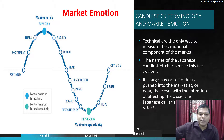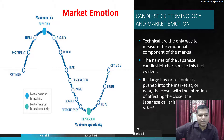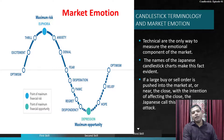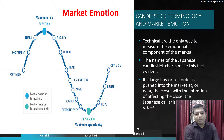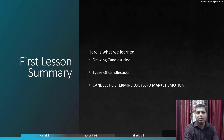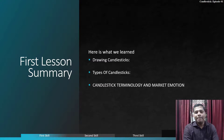Technicals are the only way to measure the emotional component of markets. The Japanese candlestick chart makes this fact evident — if a large buy or sell order is posted at or near the close with the intention of affecting it, the Japanese call this a 'night attack.' In this episode we learned: how to draw the candlestick, types of candlesticks, candlestick terminology, and market emotion. The next episode covers candlestick patterns like hammer and shooting star.